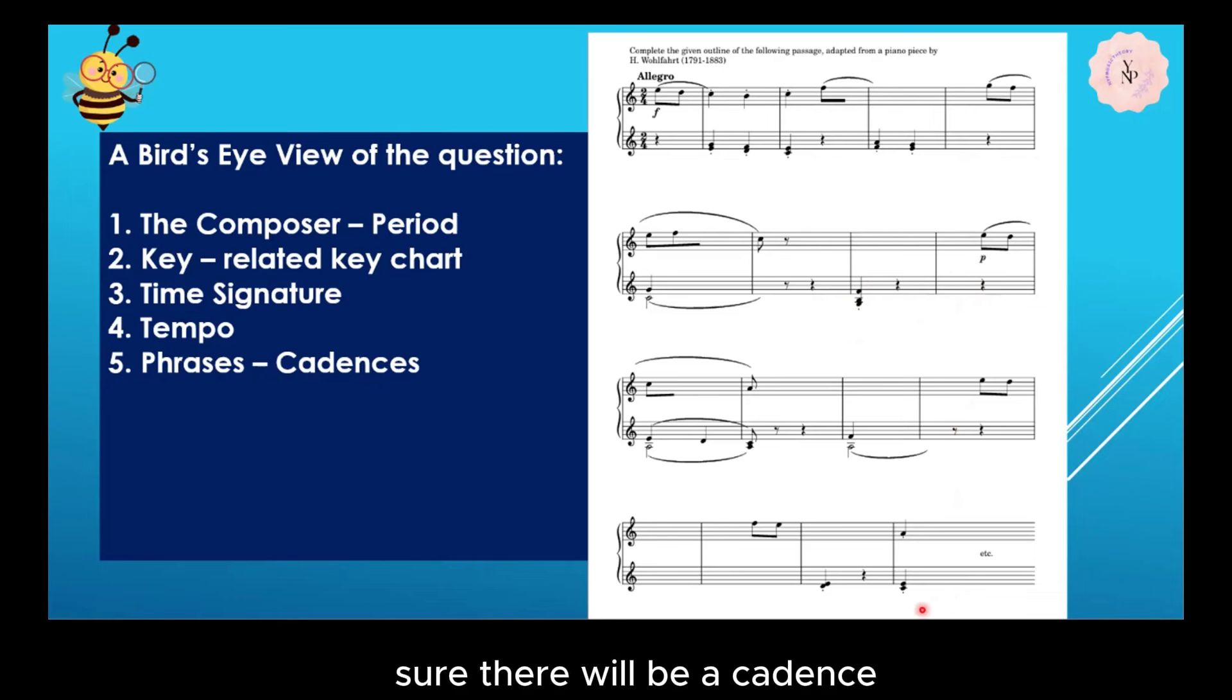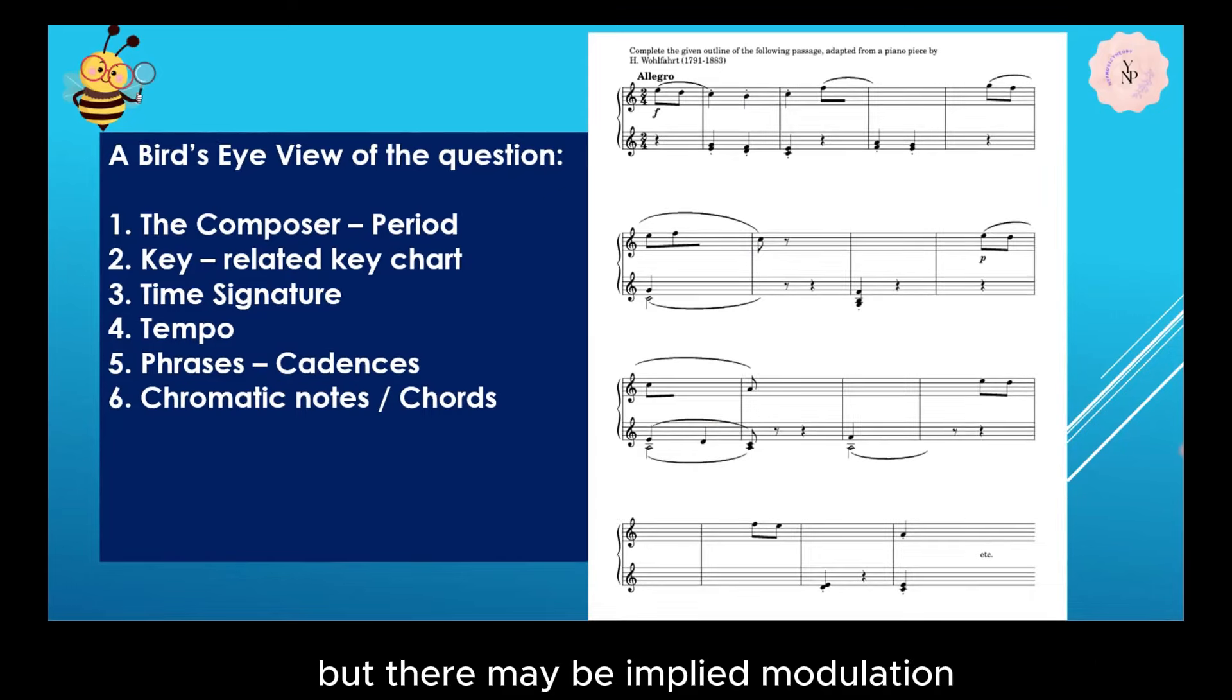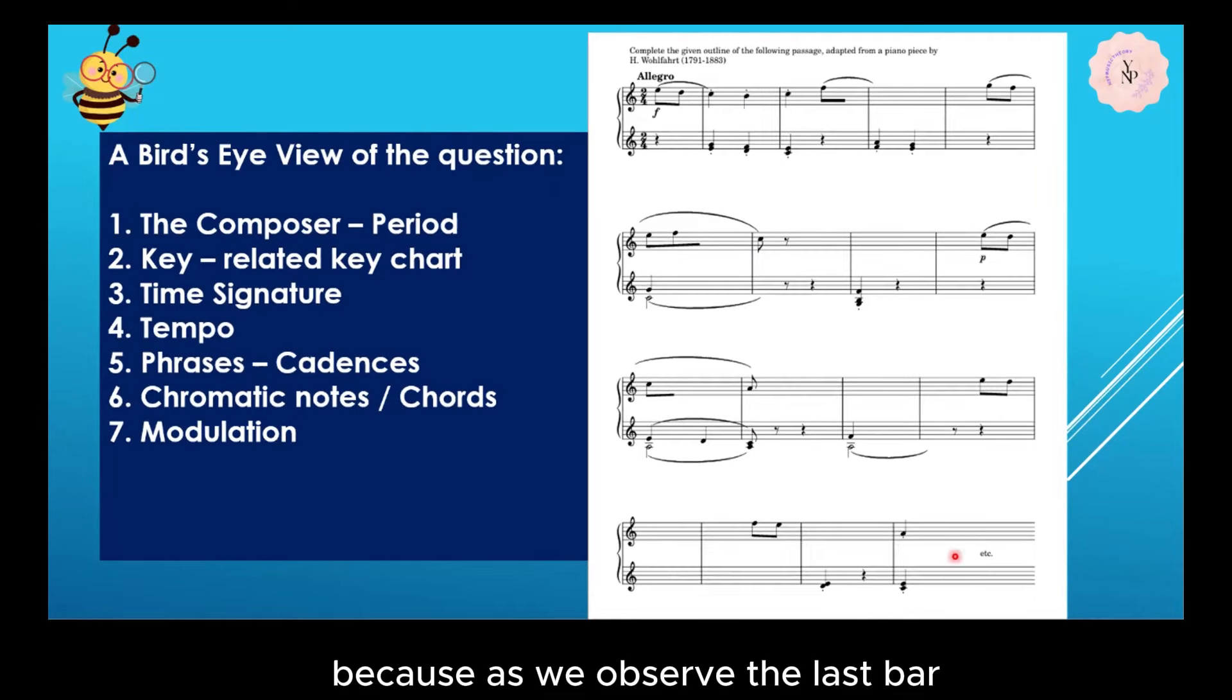Number six, we will observe the chromatic notes or chromatic chords. As we browse through every line, every bar, there is no chromatic notes and no chromatic chords. But there may be implied modulation because as we observe the last bar, it is in A minor chord, and A minor is the relative minor of C major. Most likely there will be an implied modulation at the end.